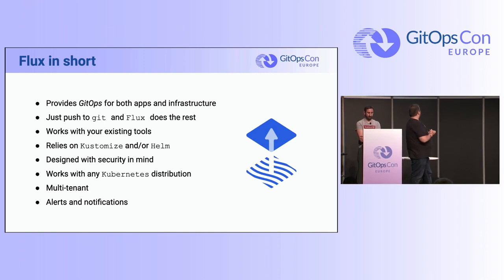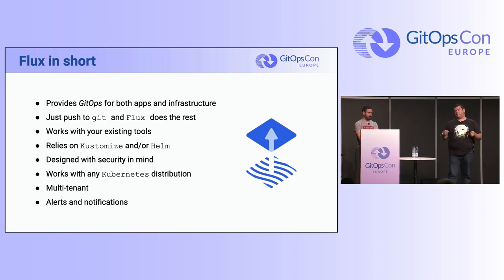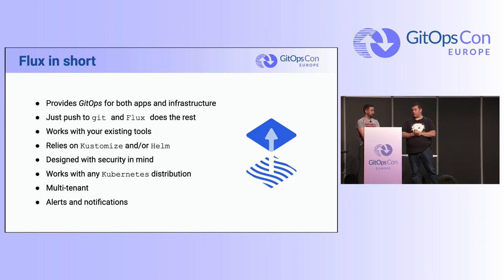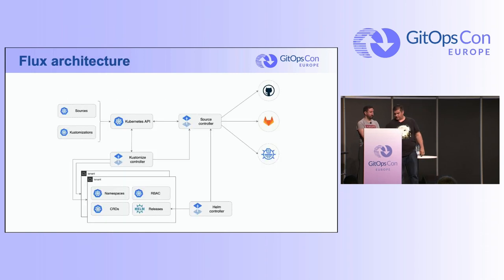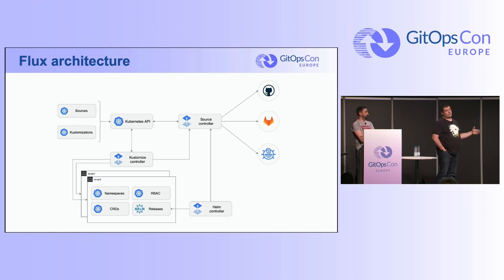What we will show you is a multi-tenant example of what we can do with Flux. It embeds alerts and notifications to notify operations teams or dev teams that deployments are performed. This is the schema of the Flux components on the cluster side. In addition to these components, there is a single CLI used mostly to bootstrap files.